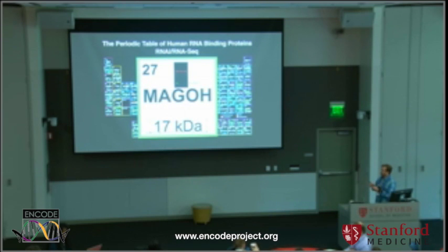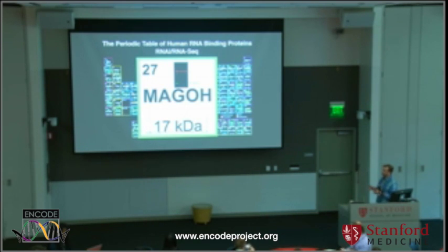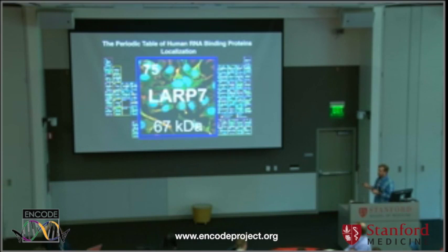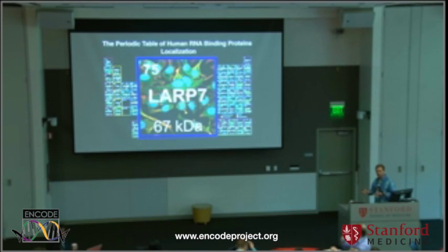We're also trying to assess the function of these binding sites by doing either RNAi knockdowns or CRISPR knockouts for these RNA binding proteins, followed by RNA-seq, so we can see how depleting these proteins impacts the transcriptome. Finally, unlike transcription factors which interact with DNA in the nucleus, RNA binding proteins can function anywhere within the cell. So with the reagents we're generating, we're actually performing immunohistochemistry experiments to look at where within the cell each RNA binding protein is located. These experiments are being done by Eric LeCoyer's lab in Canada.